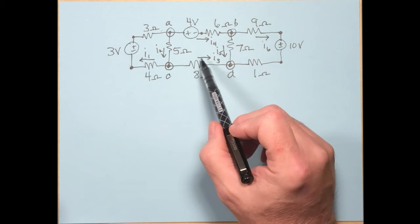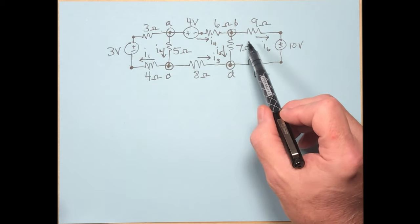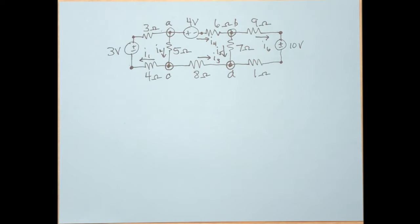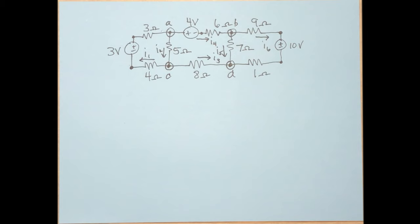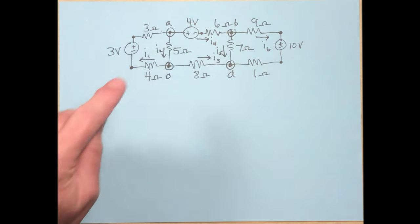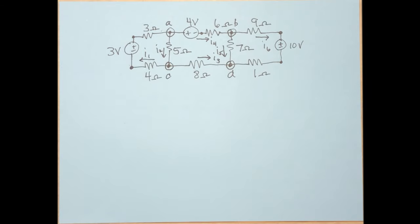We've assigned current directions with arrows. It's okay if you don't know the actual direction — if the current solves as negative, it just means the arrow was guessed wrong. Don't go back and change the arrow; just work with positive and negative currents. Assigning current directions is the first step in solving any KVL or KCL problem. A KVL/KCL problem consists of solving for the unknown currents.